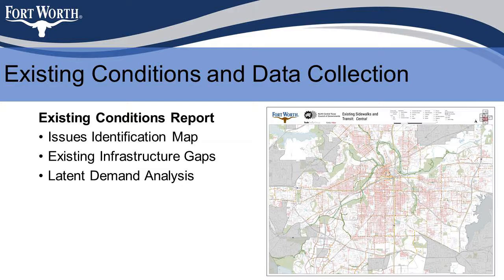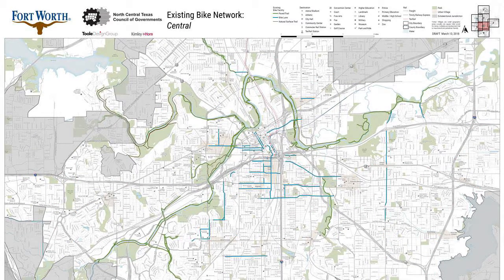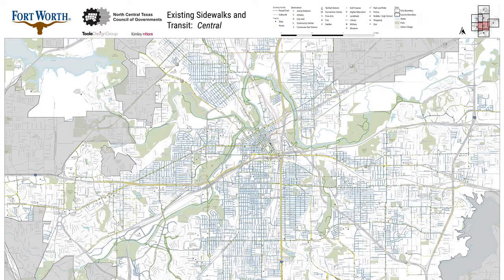Another early step you'll see evidence of today is the existing conditions analysis. We've been gathering information on where people are riding, where the crashes are, and where the existing facilities are — that will help us think about where the demand is for future investments. This is an example of one of our crash maps, showing corridors with a lot of killed and seriously injured crashes as well as non-fatal crashes. You can see some of the key corridors and concentrated clusters where crashes are occurring. We've also mapped the existing bike facilities: trail corridors in green, unpaved trails in brown, and on-street bike facilities in blue, along with the sidewalk and transit network.